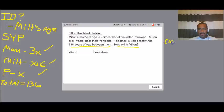So we're just going to come down here and we're going to say X plus six, that's Milton, plus Milton's mom is 3X because she's three times Penelope's age, and then plus X is Penelope.